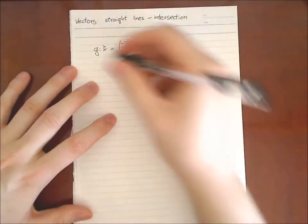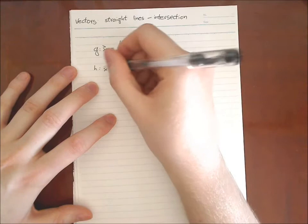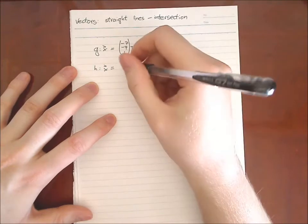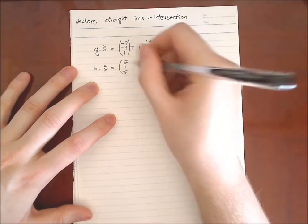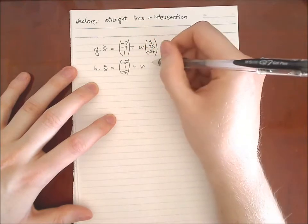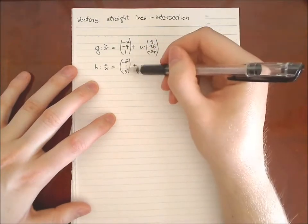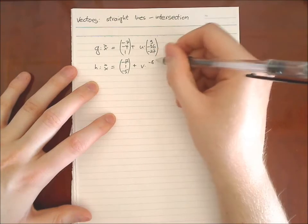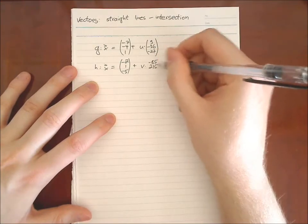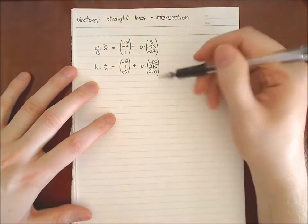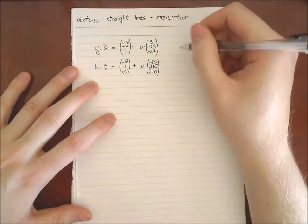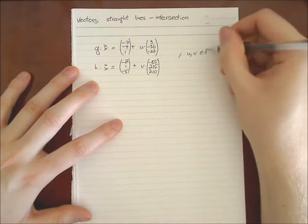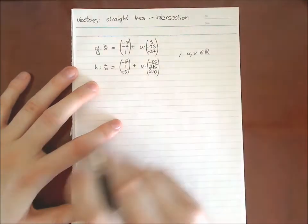And u, I'm going to show you in a second, u is just a number, it is not a vector, and you can see this obviously because it doesn't have a vector arrow on top. So we have h minus two, one minus five, plus v times minus 85, 215 and 210. This is the directional vector, this is the support vector. And finally we should write that u and v are element R, so not vectors, just plain numbers.